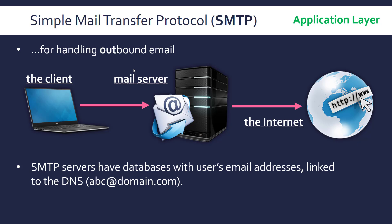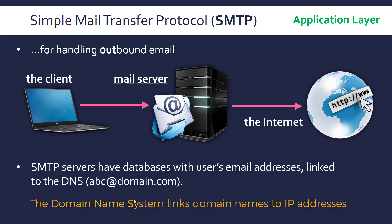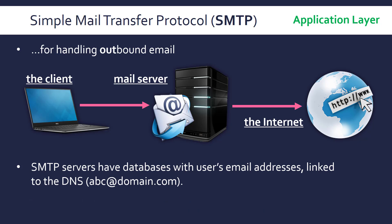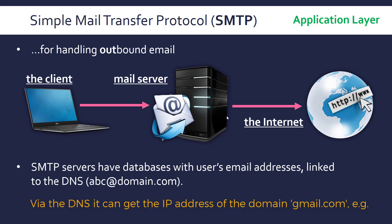A mail server that runs this protocol will have a database with user's email addresses linked to the DNS. So you've got a domain part of your email — say this is a Microsoft mail server. If you're sending it to someone at gmail.com, it will know where to send that. It will know the servers of Gmail because it will have this database that's linked to the DNS, so it will be able to send it to other mail servers where the inbound email protocols work.